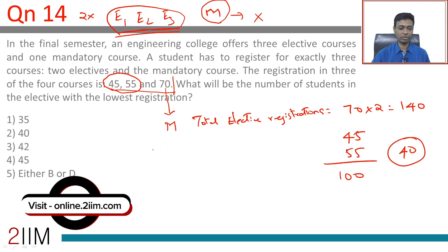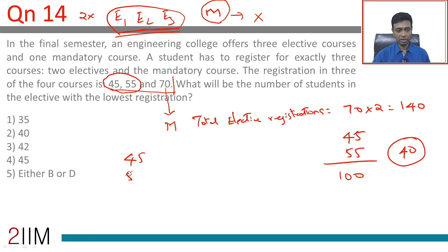The other way of thinking about this: 45, 55, and 70 could all be electives. That means we account for 170. Half of this would be 85 students who opted for the mandatory course.